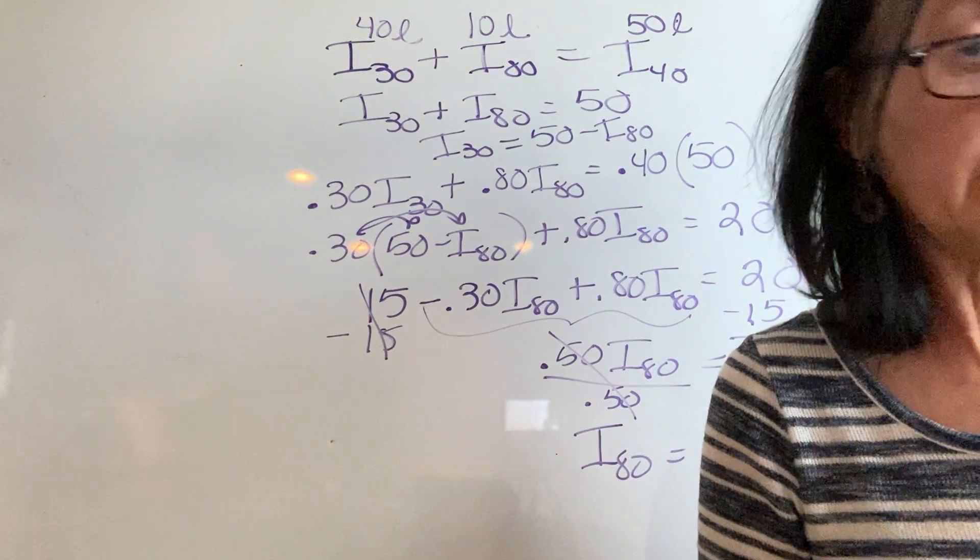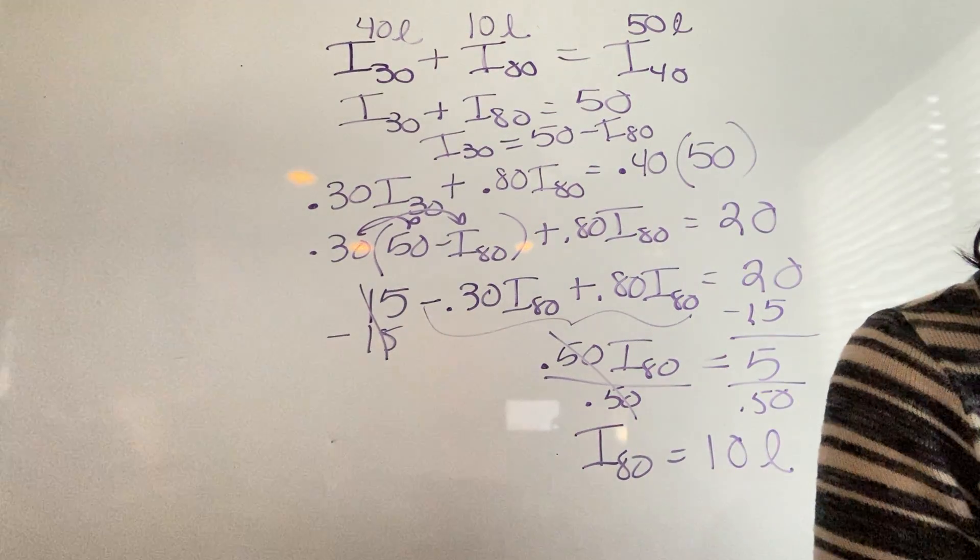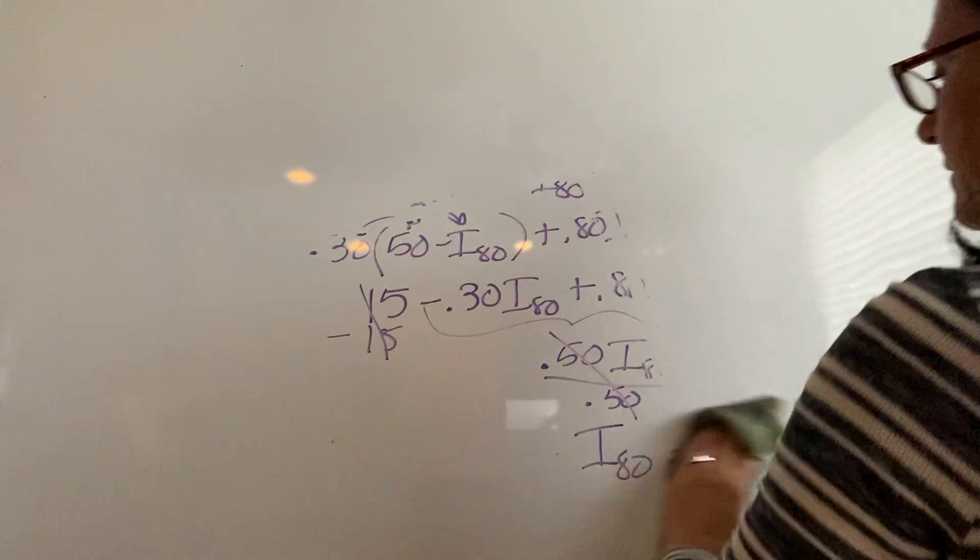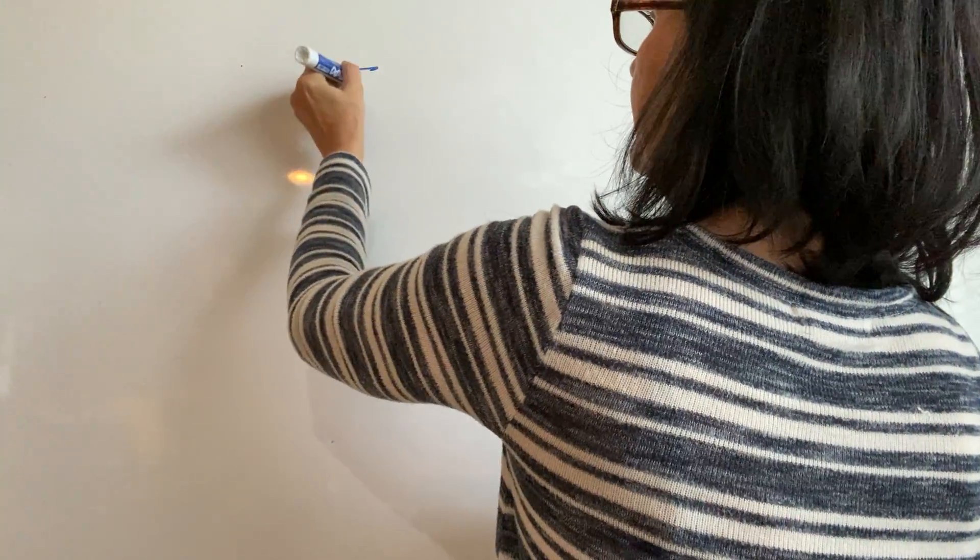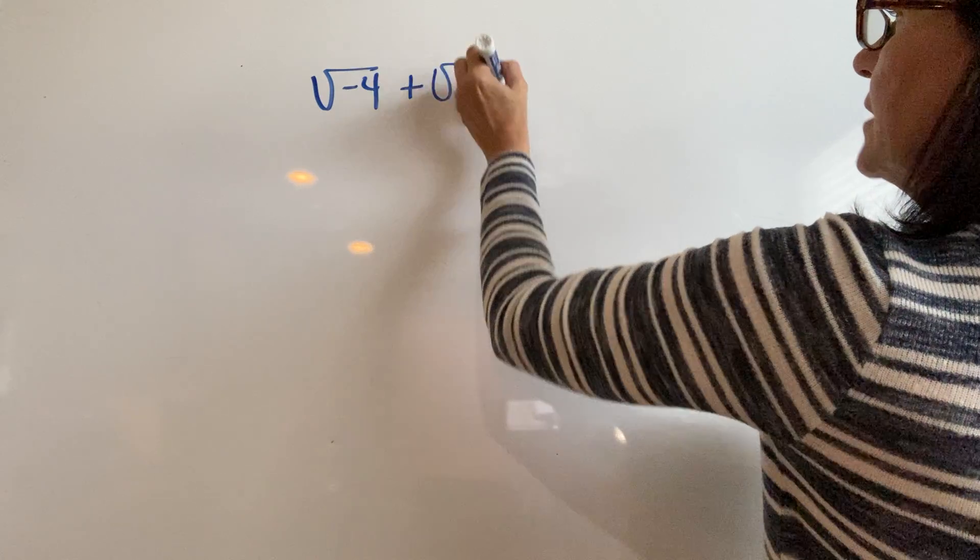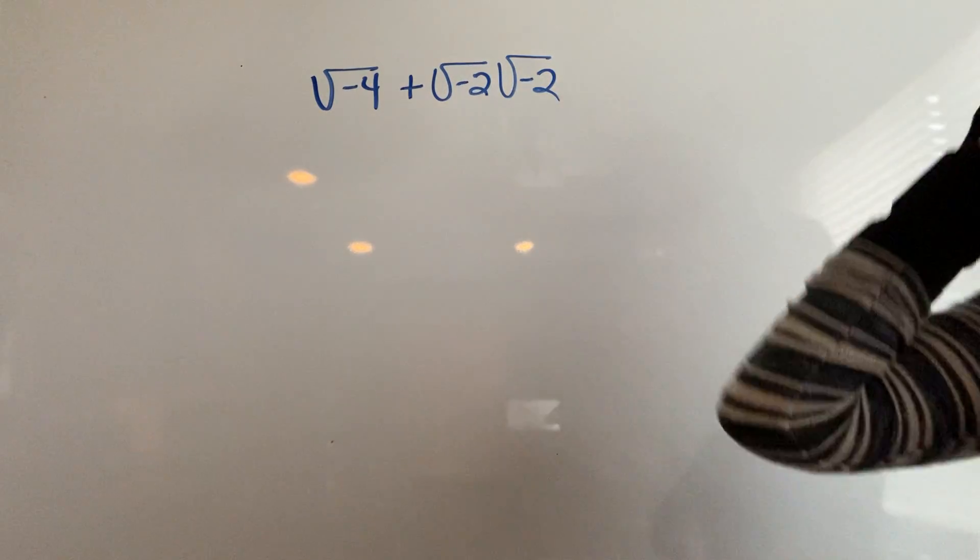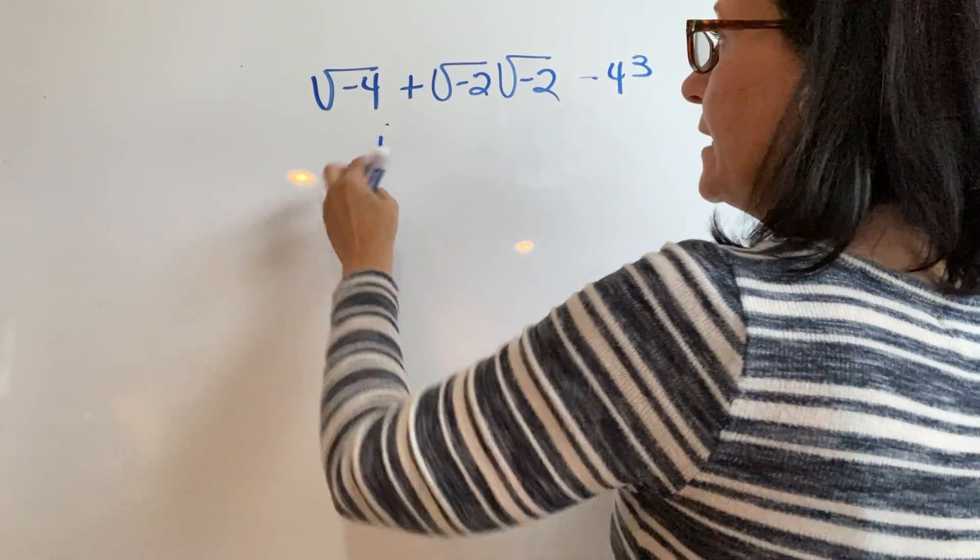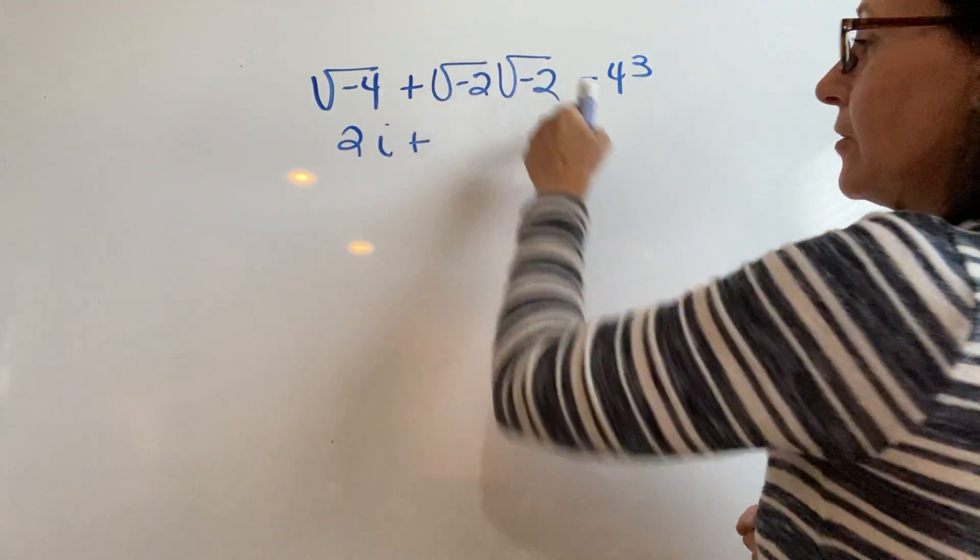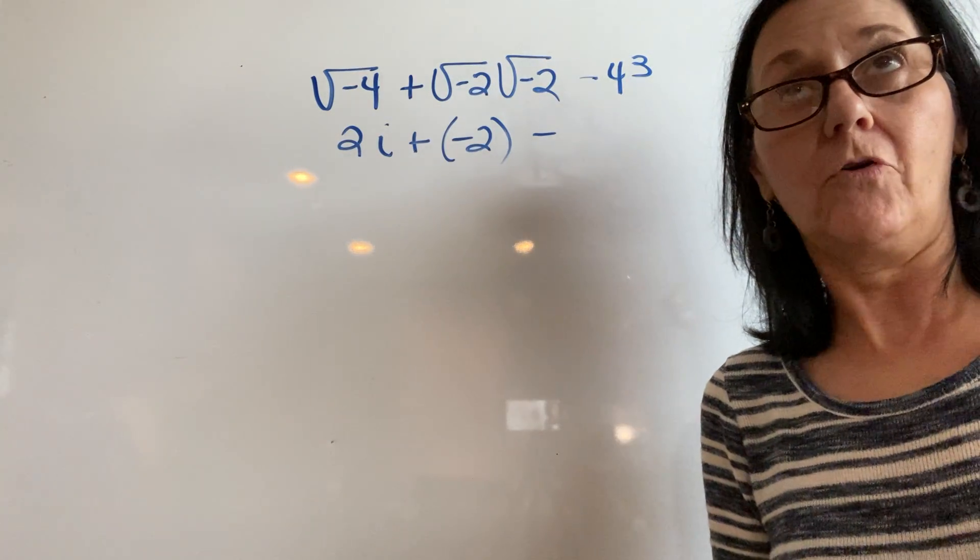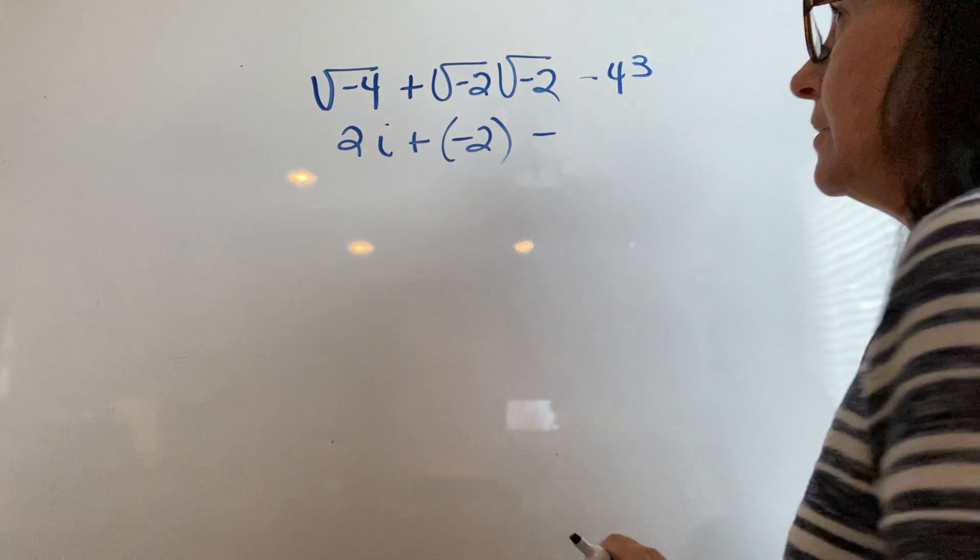The next question is on the next page, number 10. This is the square root of negative 4 plus square root of negative 2 times the square root of negative 2 minus 4 cubed. I know that negative under that radical is an i. The square root of 4 is 2. A radical times itself is just what's under the radical, that's negative 2. 4 cubed is 64, because 4 times 4 is 16, 16 times 4 is 64.